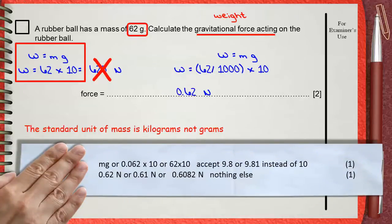If you look at the mark scheme, the first mark is given as the method mark, saying MG, or 0.062 times 10, or even if you write the wrong substitution, 62 times 10, this will give one mark. You can also use 9.8 or 9.81 instead of 10 for the G, the acceleration due to gravity. But if you make a wrong substitution, the final answer will be incorrect. The second mark is for the final answer, which may be 0.62 or 0.61 if you use 9.8, or it may be 0.6082 if you used 9.81. Nothing else will be accepted.